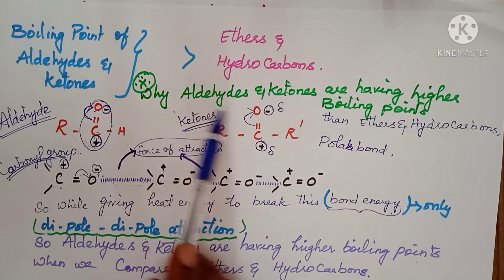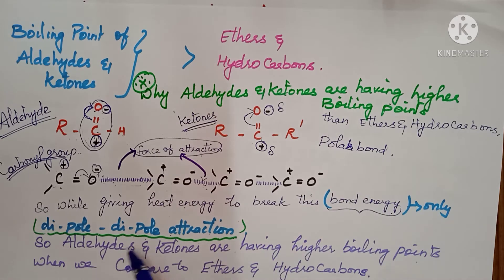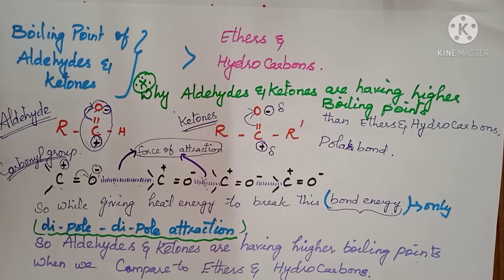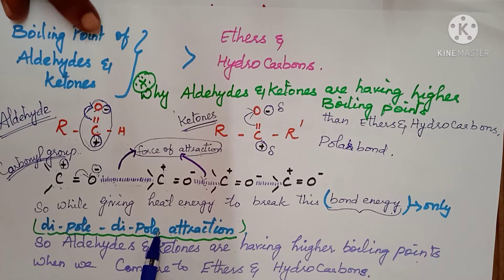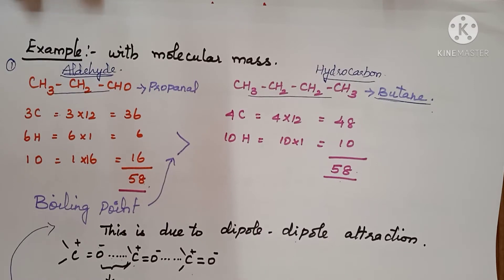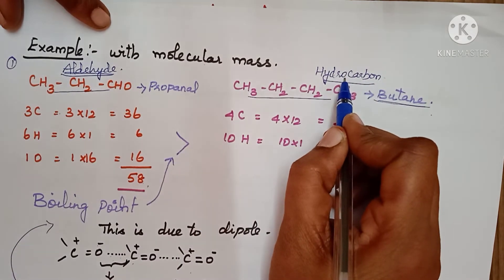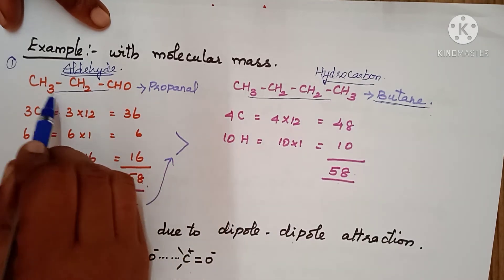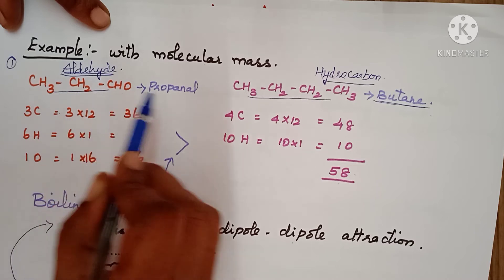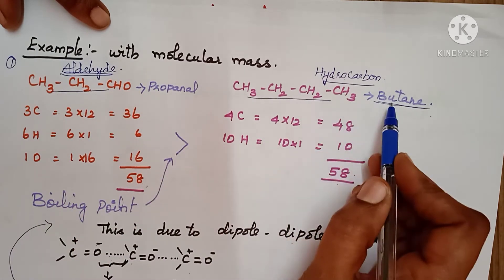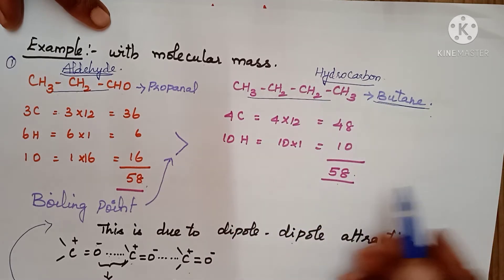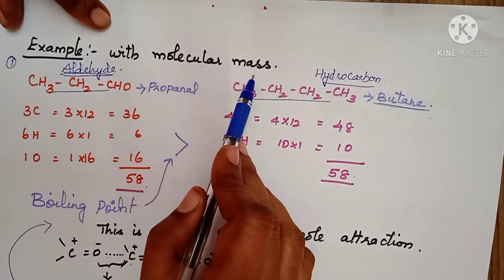We are comparing the same molecular mass: propanal (CH₃CH₂CHO) versus butane (CH₃CH₂CH₂CH₃). Propanal has 3 carbons (36), 6 hydrogens (6), and 1 oxygen (16), giving a molecular mass of 58. Butane also has a molecular mass of 58. Both have the same molecular mass but are different compounds.